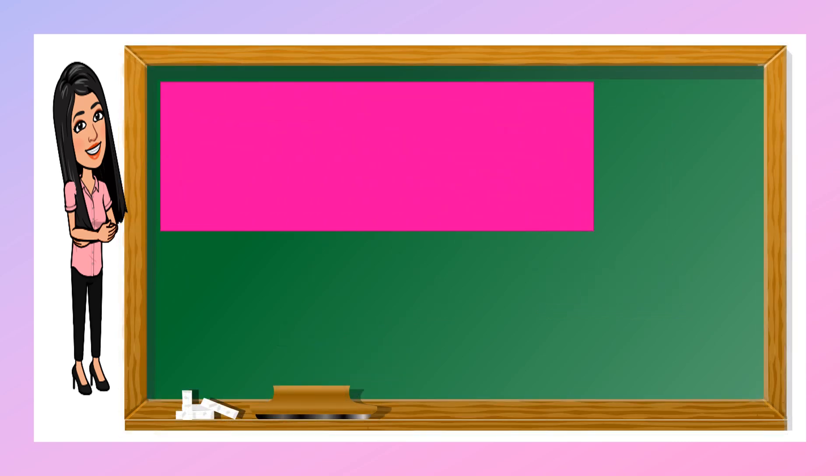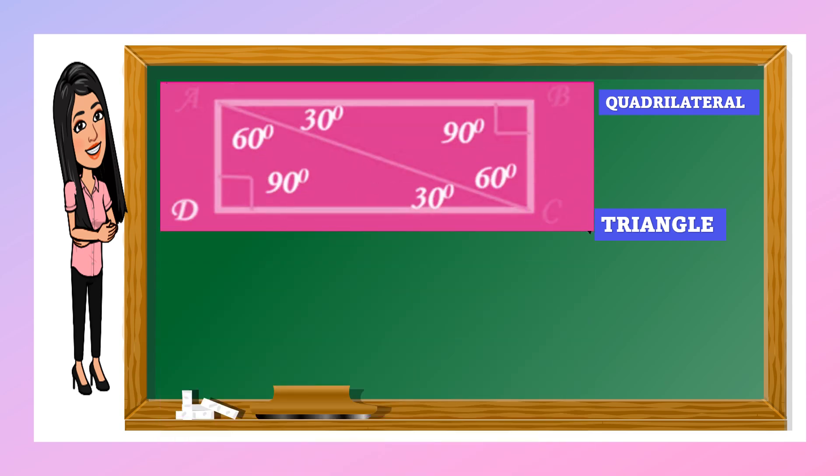From here, this figure is a quadrilateral. If we cut it diagonally like this, what figure can you form? We have here two triangles that can be formed when we cut a quadrilateral. Look at this illustration.